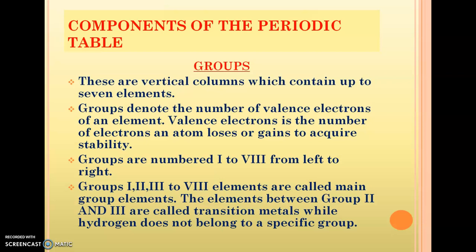Groups normally denote the number of valence electrons of an element. These valence electrons are contained in the outer shells. Valence electrons are the number of electrons that an atom loses or gains to acquire stability. Groups are numbered from one to eight, so there are eight groups on the periodic table.